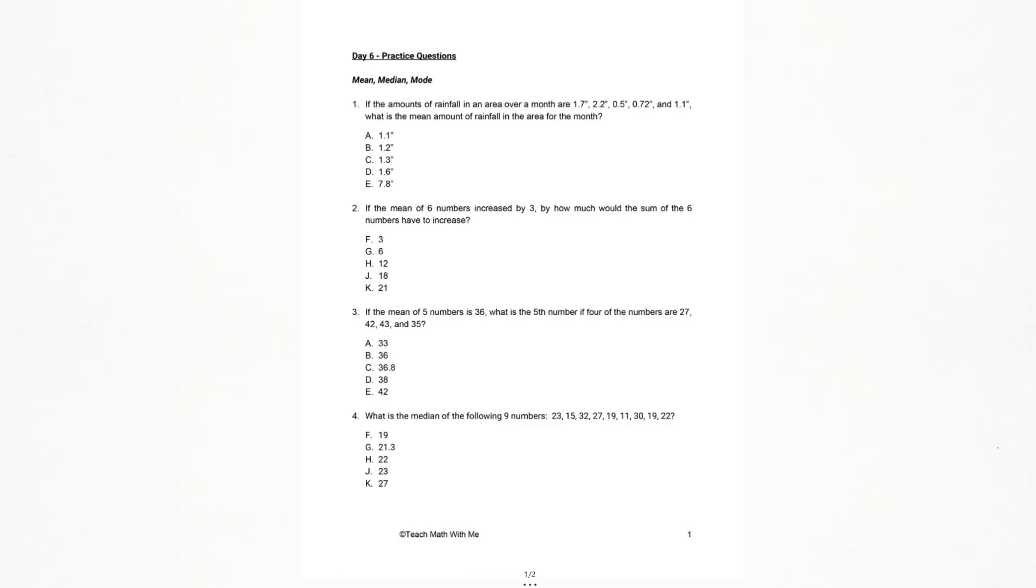Let's start with number one. It says if the amounts of rainfall in an area over a month are these values: 1.7, 2.2, 0.5, 0.72, and 1.1, what is the mean amount of rainfall in the area for the month?